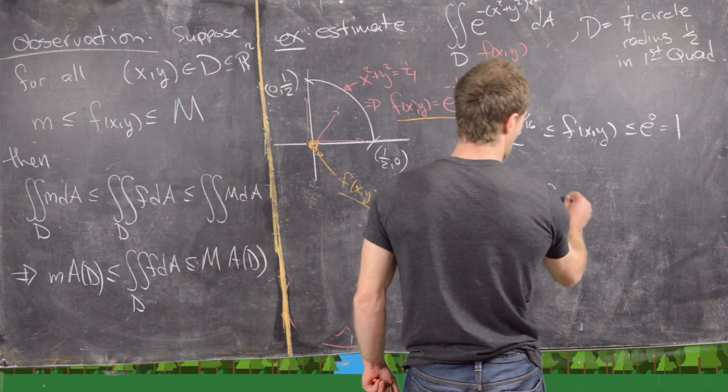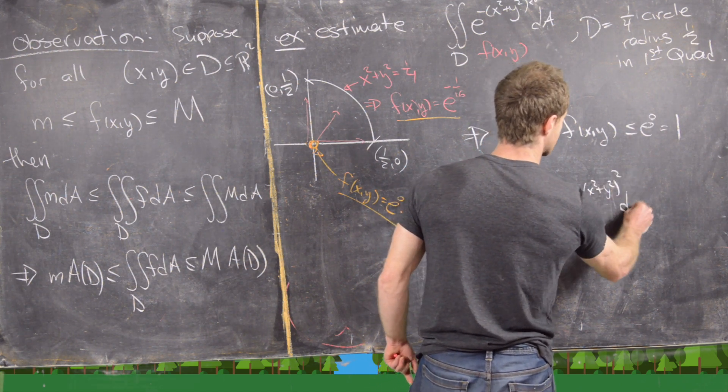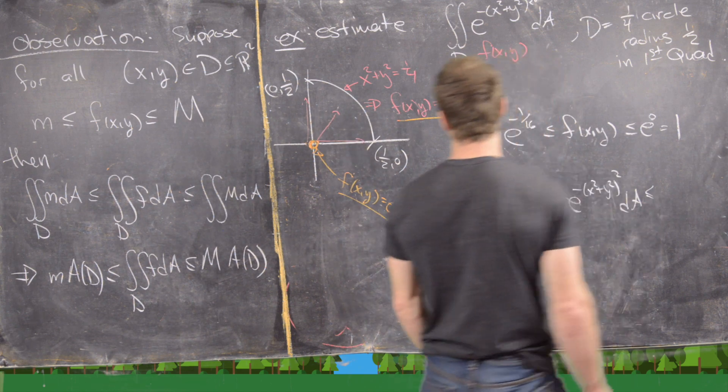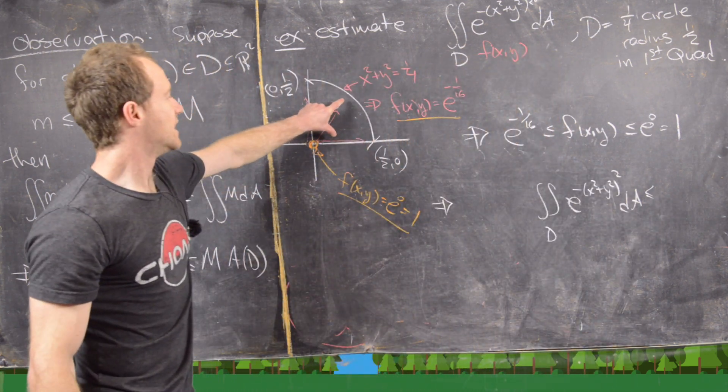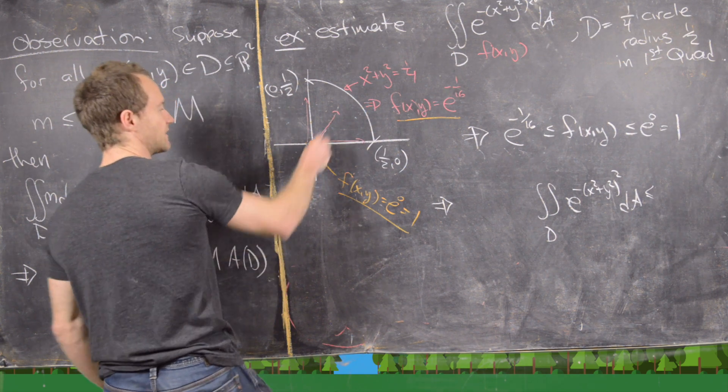which tells us that our double integral over D of e^(-(x²+y²)²) dA is going to be bound between the area of this quarter circle. But we can go ahead and calculate that pretty easily.